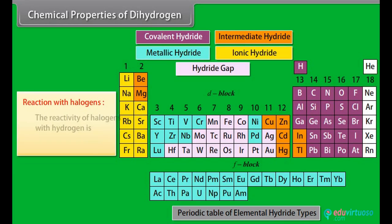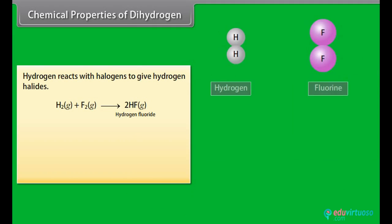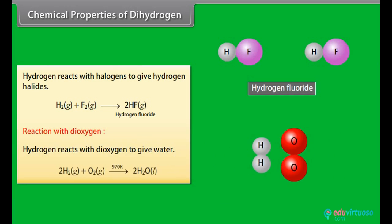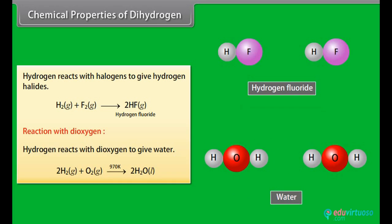Chemical properties of dihydrogen. Reaction with halogens: The reactivity of halogens with hydrogen is fluorine greater than chlorine, greater than bromine, greater than iodine. Hydrogen reacts with halogens to give hydrogen halides. Reaction with dioxygen: Hydrogen reacts with dioxygen to give water.